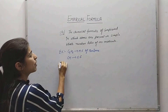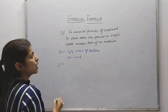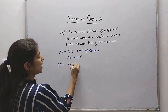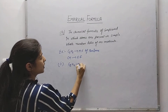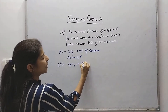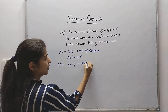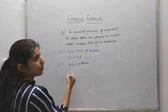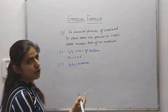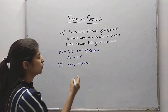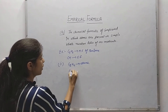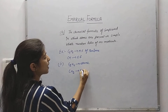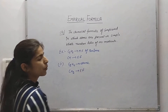Another example: we can take C2H4, which is the formula of ethene. It can be divided by 2, so it will become CH2. This is the empirical formula.